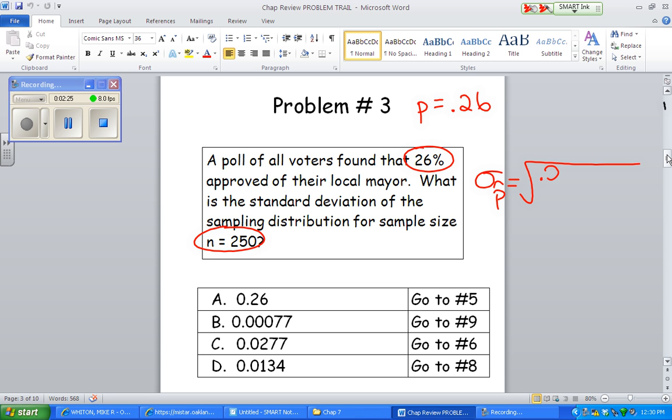Okay, and then of course they give you n. And they're looking for the standard deviation of the sampling distribution. So the formula for that would look like the standard deviation of the P hats. P, 1 minus P. I like to kind of do the subtraction before I even write it out. So, and then over n and do the calculations. Throw that in a calculator. That one should give you answer choice C, 0.0277.